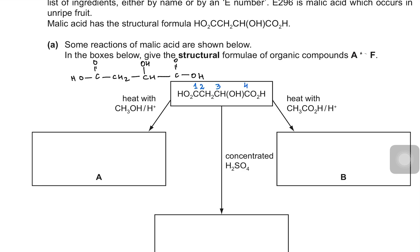Now let's begin with option A. When they heat it with methanol — this is methanol — and there's an acid as a catalyst, don't forget that carboxylic acids reacting with methanol or any alcohol would react to make an ester. So here you can expect esterification.